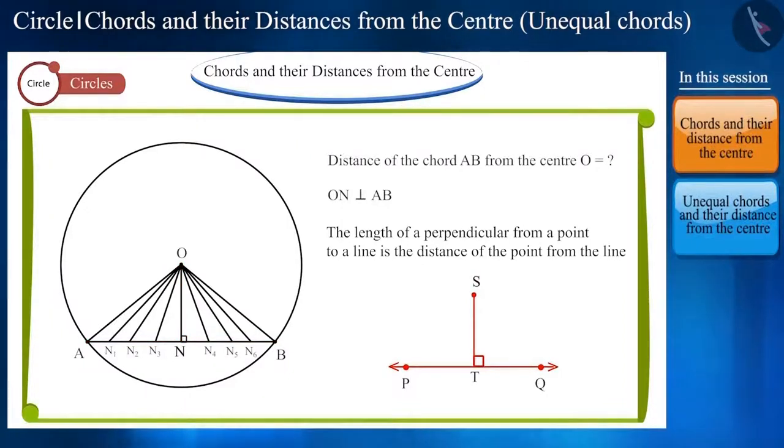For example, in this circle, the distance between center O and chord AB will be ON which is perpendicular to chord AB.